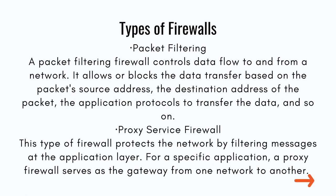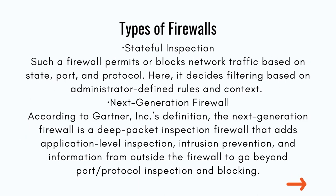Type 2: Proxy Service Firewall. This type of firewall protects the network by filtering messages at the application layer. For a specific application, a proxy firewall serves as the gateway from one network to another. Type 3: Stateful Inspection. Such a firewall permits or blocks network traffic based on state, port, and protocol. It decides filtering based on administrator-defined rules and context.